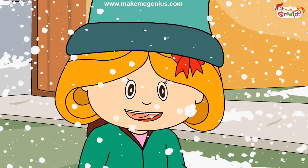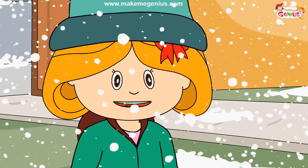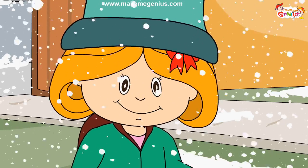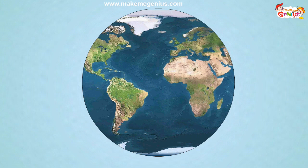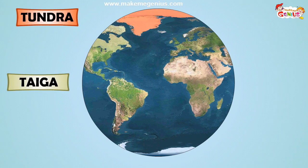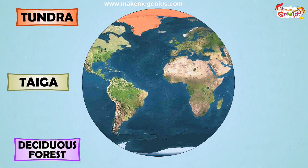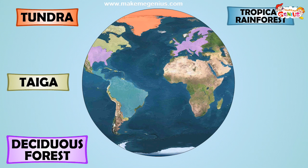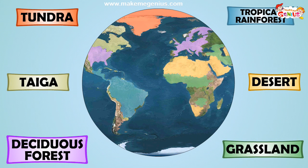You are correct. Let's have a look at these six major biomes. These six major biomes are tundra, taiga, deciduous forest, tropical rainforest, desert, and grasslands.